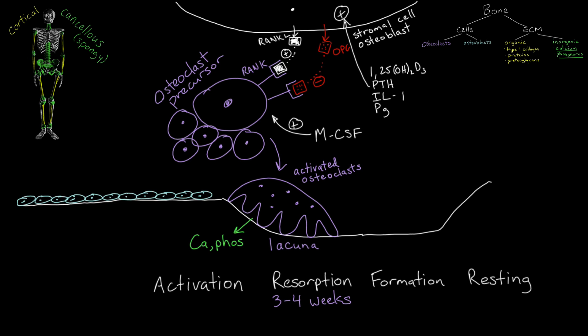A multipotent mesenchymal stem cell undergoes differentiation to give rise to bone-building osteoblasts, which synthesize the healthy new organic matrix, including collagen type 1 and alkaline phosphatase.